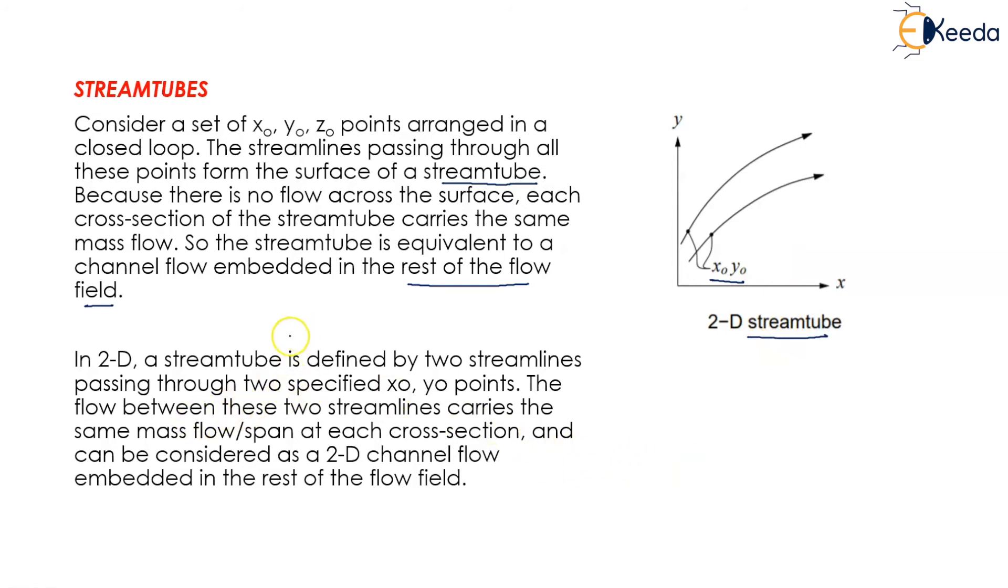In two dimensions, a stream tube is defined by two streamlines. We will be having two different streamlines, x naught and y naught, which pass through two different specified points. The flow between these two streamlines carries some mass at each cross section and can be considered as two-dimensional channel flow embedded in the rest of the flow field.